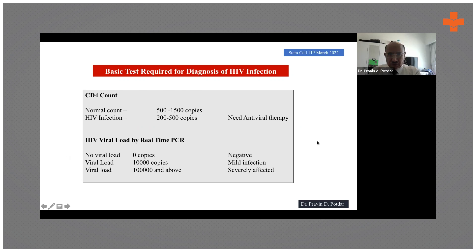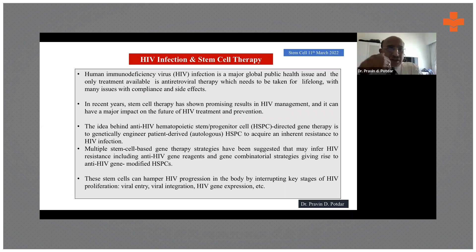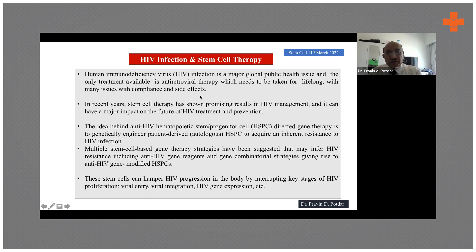Now, what is the role of stem cell therapy in HIV infection? Human HIV infection is a major global public health issue, and the only treatment currently available is antiviral therapy, which must be taken lifelong with many side effects. Stem cell therapy offers a better way. In recent years, stem cell therapy has shown promising results in HIV management and could have a major impact on the future of HIV treatment and prevention. The idea behind anti-HIV hematopoietic stem progenitor cell (HSPC) directed gene therapy is to genetically engineer patient-derived autologous HSPCs to acquire inherent resistance to HIV infection.